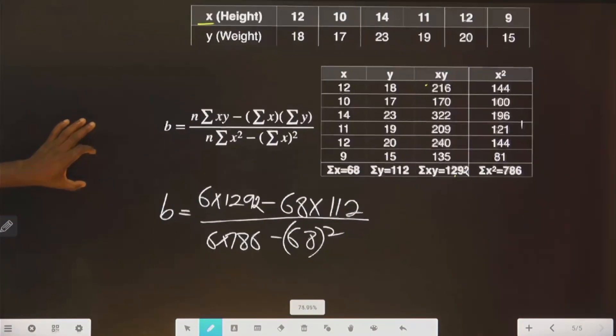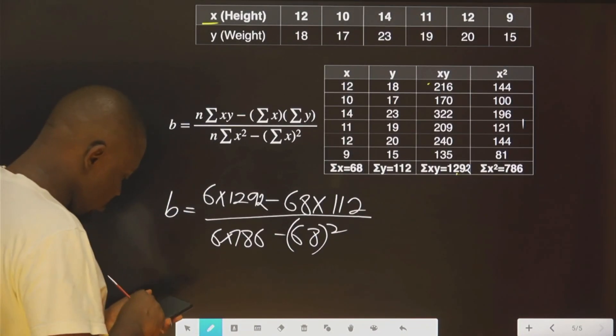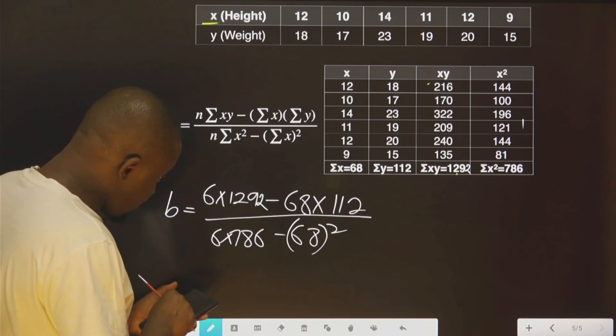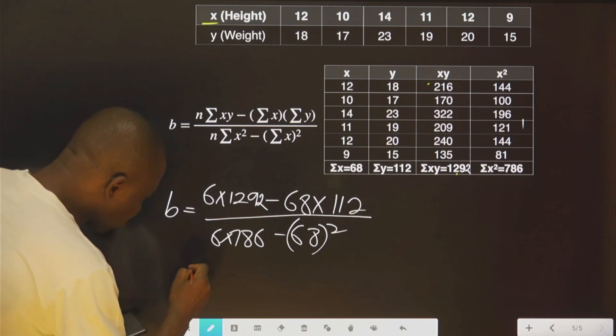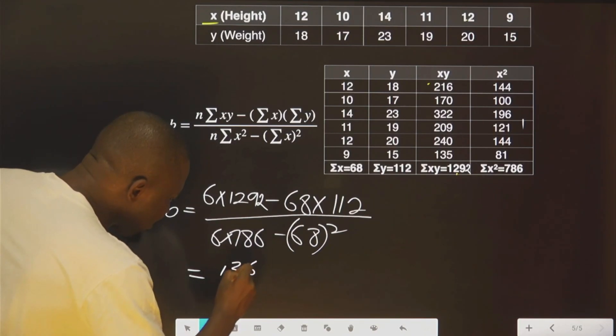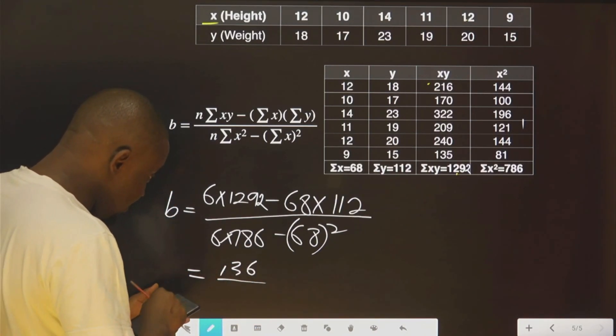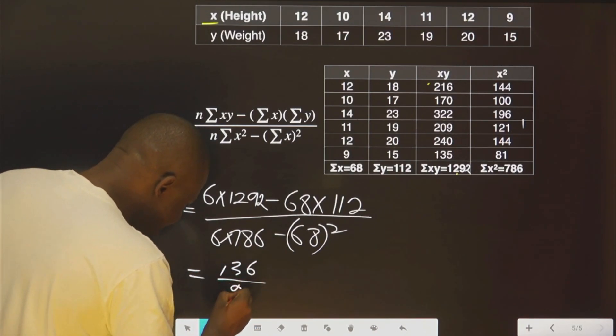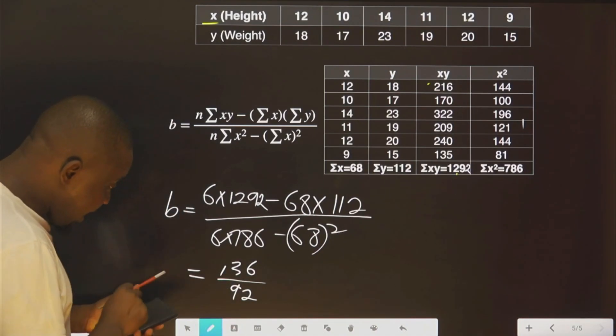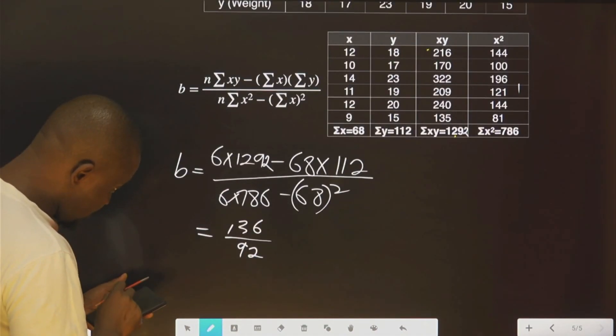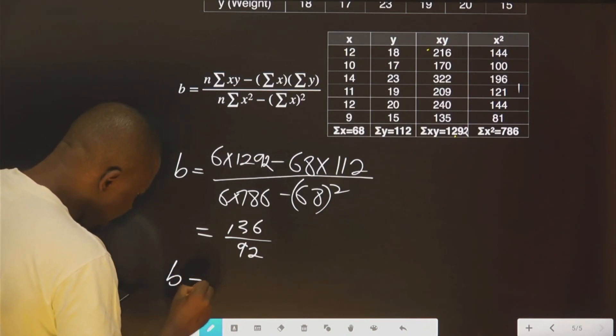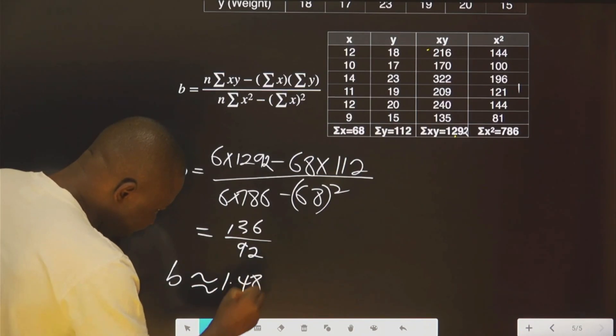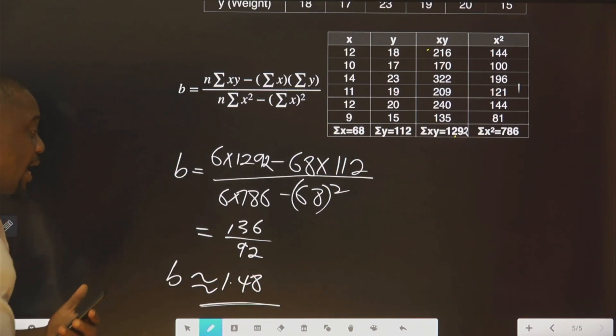So the next thing I need to do now is to work on this and get the answer. This is what, 136 over 92. Let's divide this. This is approximately 1.48. That is B.